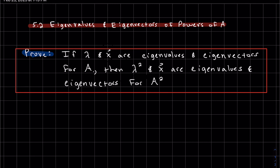Okay, so this is part one of section 5.2 in the book we're doing, and it's basically eigenvalues and eigenvectors of powers of A.